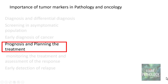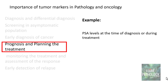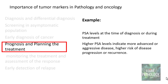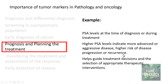The third use is prognosis and planning the treatment. For example, PSA levels at the time of diagnosis or during treatment make a big difference — higher PSA levels indicate more advanced or aggressive disease, meaning higher risk of disease progression and recurrence. Once you know this, it helps guide treatment decisions and selection of appropriate therapeutic interventions. This is how tumor markers help in prognosticating and planning treatment.